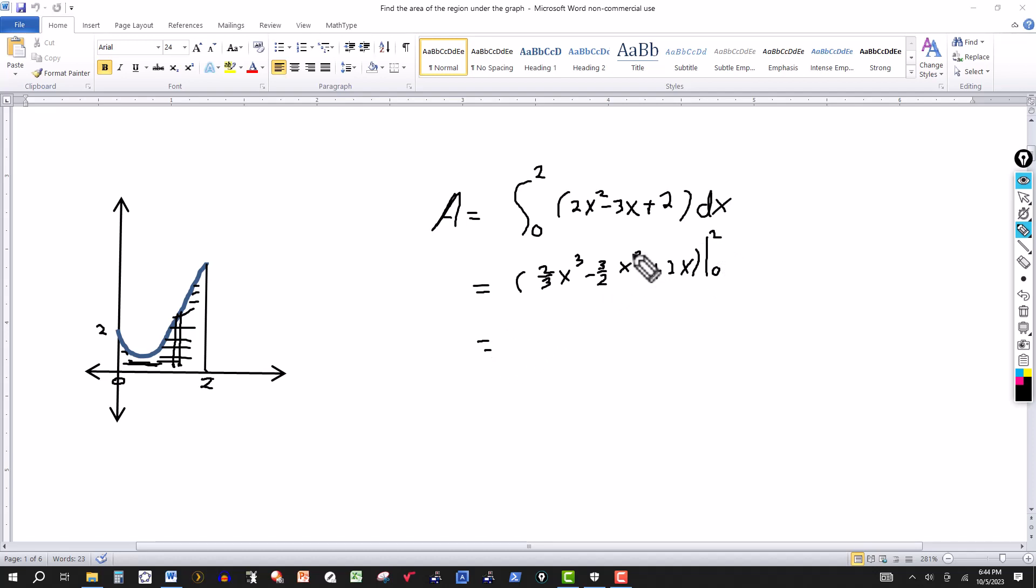We evaluate this expression at 2 first. 2³ is 8 times 2 is 16, over 3, this will be 16/3. For the next one, 2² is 4, times -3, that's -12, over 2. Plus 2 times 2 is 4.